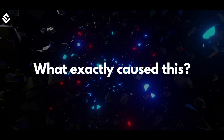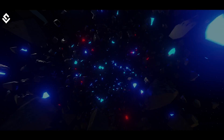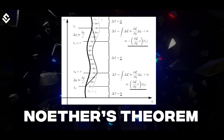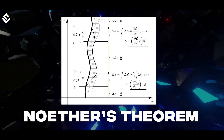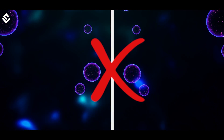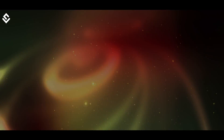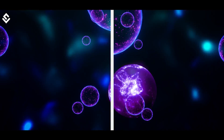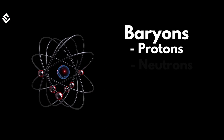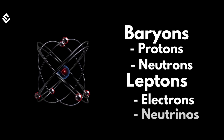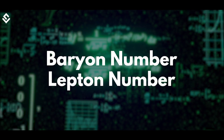But what exactly caused this extra matter to appear? From Noether's theorem, we know that for every symmetry in the physical laws, there must be a conservation law associated with it. Whenever this symmetry breaks down, the energy levels of the system change, and an extra field or particle appears during the symmetry-breaking phenomenon. In the case of baryons like protons and neutrons, and leptons like electrons and neutrinos, the conservation laws present are called baryon number and lepton number.